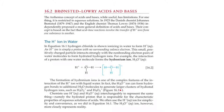The Hydrogen Ion in Water. In equation 16.1, hydrogen chloride is shown ionizing in water to form hydrogen ions. A hydrogen ion is simply a proton with no surrounding valence electrons. This small, positively charged particle interacts strongly with the non-bonding electron pairs of water molecules to form hydrated hydrogen ions. For example, the interaction of a proton with one water molecule forms the hydronium ion.